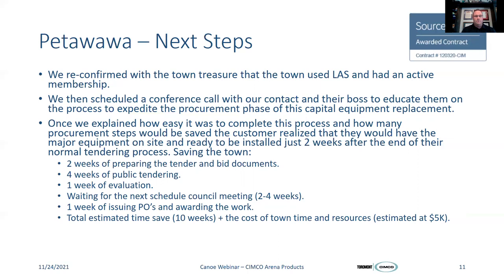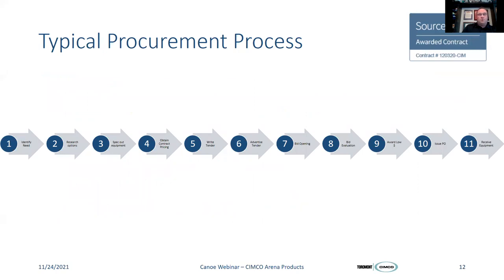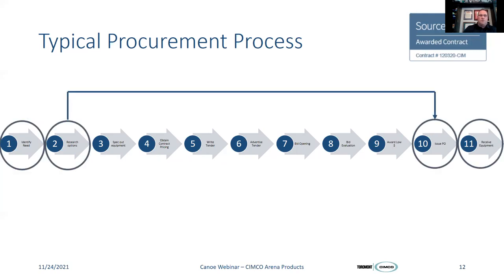Once that presentation was made, it was easy to move into the next step of the procurement process — and this is where we saved the customer a lot of time. Historically, a typical procurement process involves multiple steps: identifying a need, researching your options, then speccing out equipment, finding a consultant, obtaining contract pricing, writing a tender, advertising it, closing it, evaluating it, awarding the low bid, issuing the PO, and finally receiving your equipment. What Canoe does is eliminate steps three through nine. You work with Simcoe to identify your need and research your options, then issue your PO and receive your equipment — eliminating all those steps in the middle.